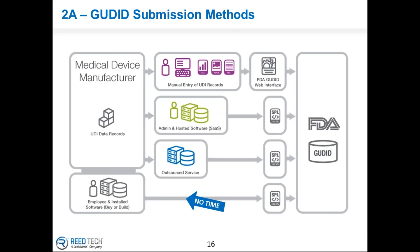The third option also uses SPL, but in this model you're able to submit your structured data and send that off to an outsourced service. If you don't have the time, energy, or effort at this point, you'd prefer they handle it. So this is a pure outsourced service model where the data is handed over to a third party and they would build the SPL and submit for you.